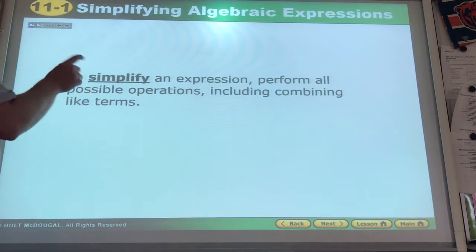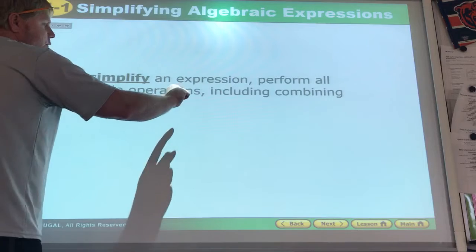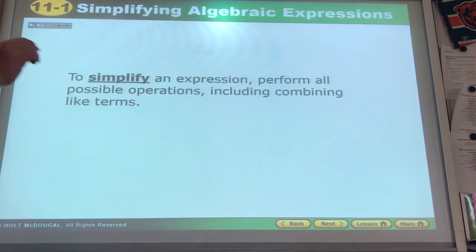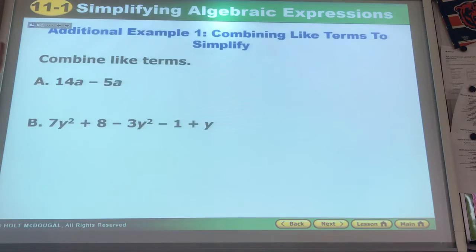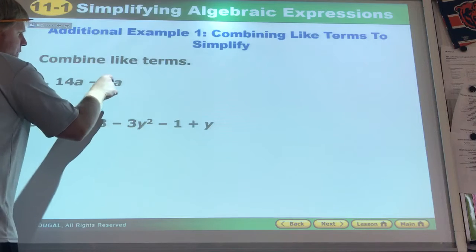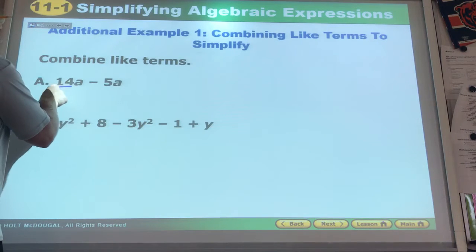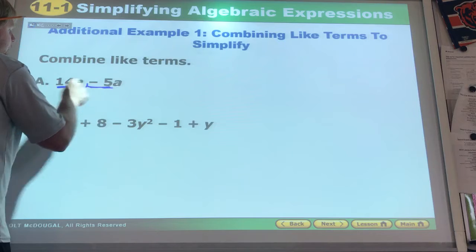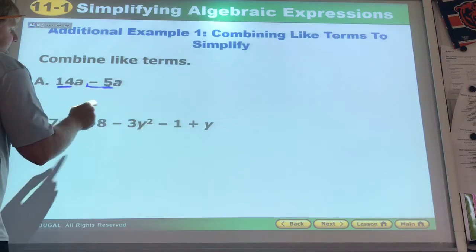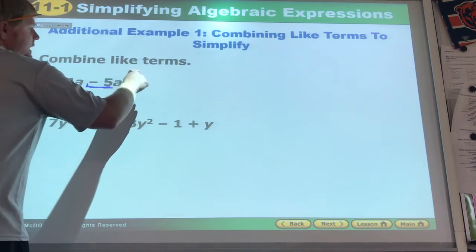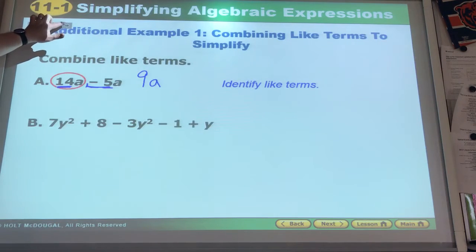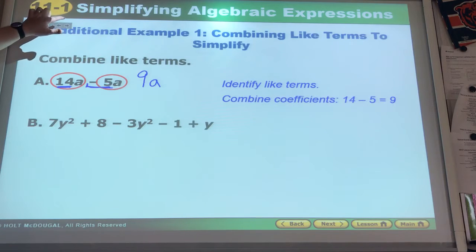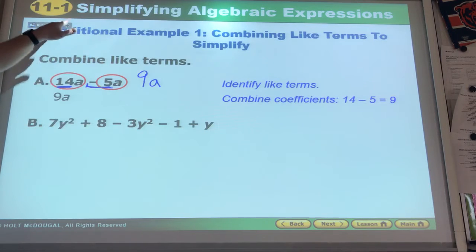To simplify, perform all possible operations including combining like terms. Combining like terms is going to be the first thing you always do. That's why they're showing it to us first. We see here a to the first, a to the first. So now we look at the numbers. Positive 14, negative 5. That is going to give us 9a. They'll say look, identify those like terms, combine the coefficients 14 minus 5, and then you get, don't forget about your variable there.